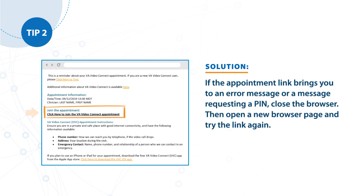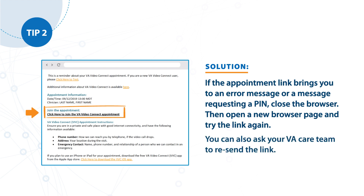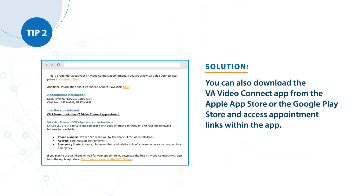If the appointment link brings you to an error message or a message requesting a PIN, close the browser, then open a new browser page and try the link again. You can also ask your VA care team to resend the link. You can also download the VA Video Connect app from the Apple App Store or the Google Play Store and access appointment links from within the app.